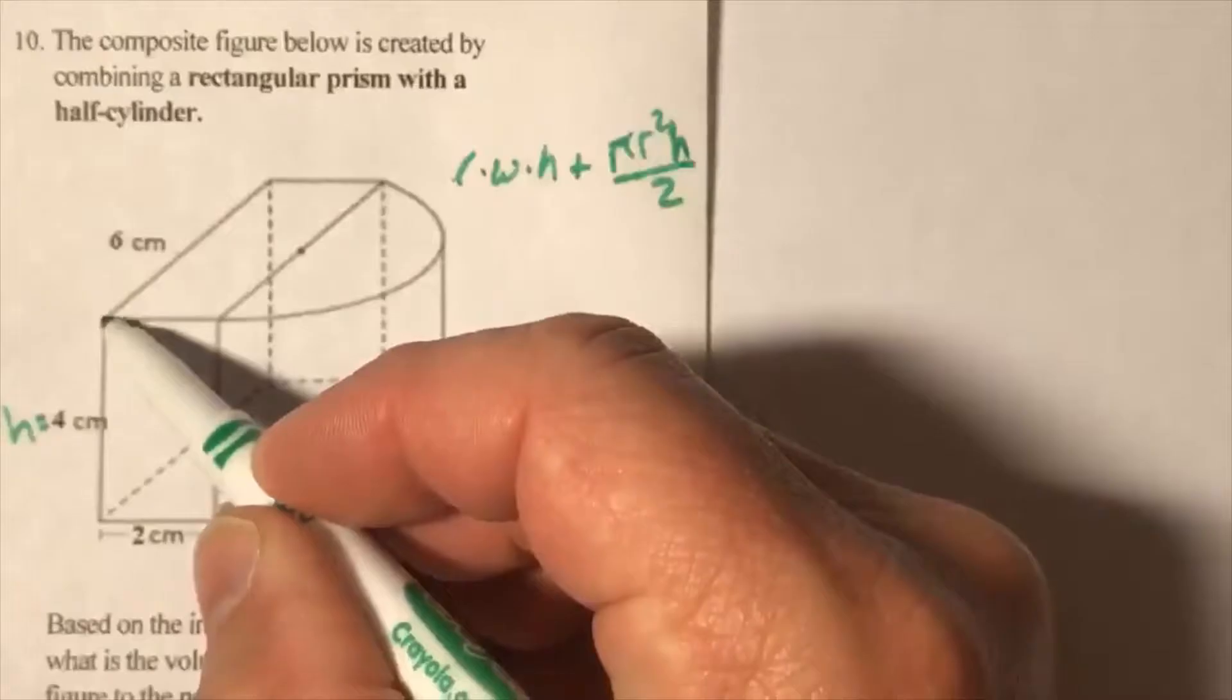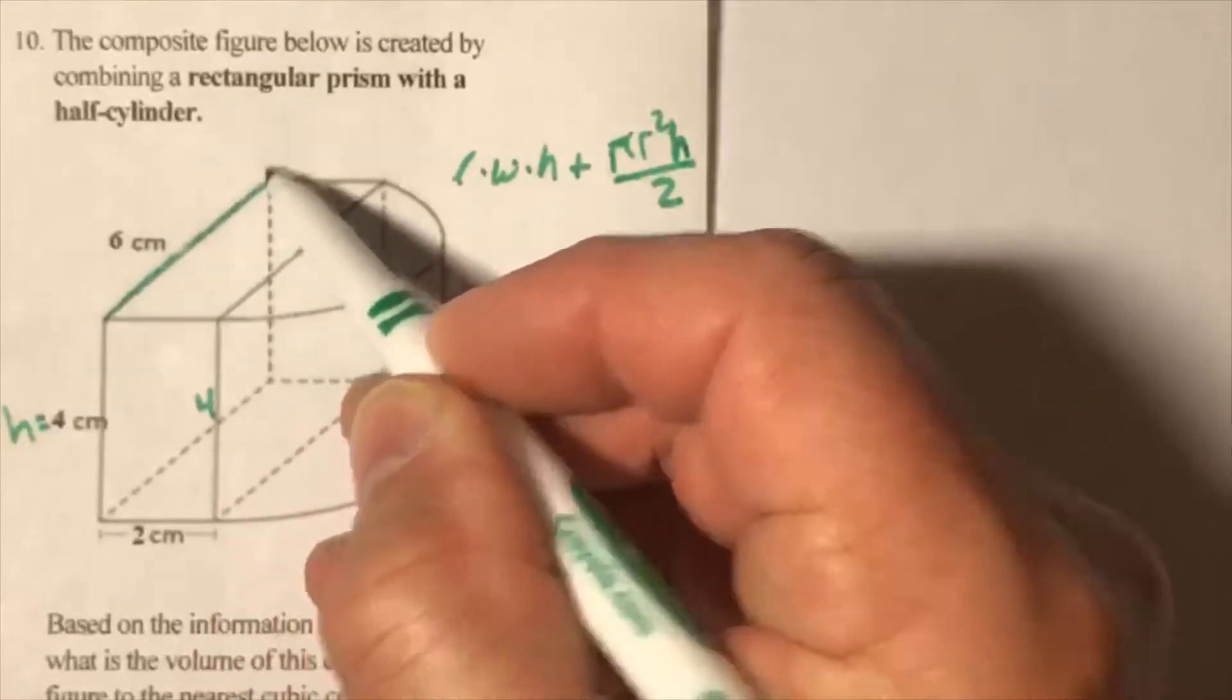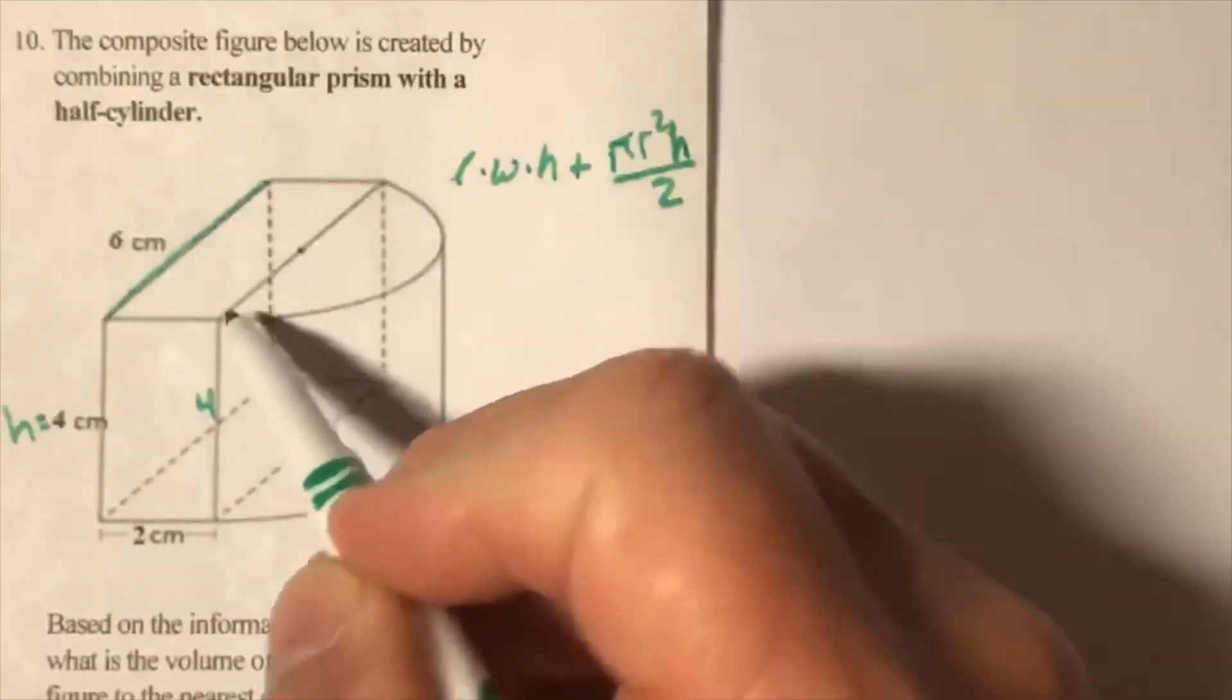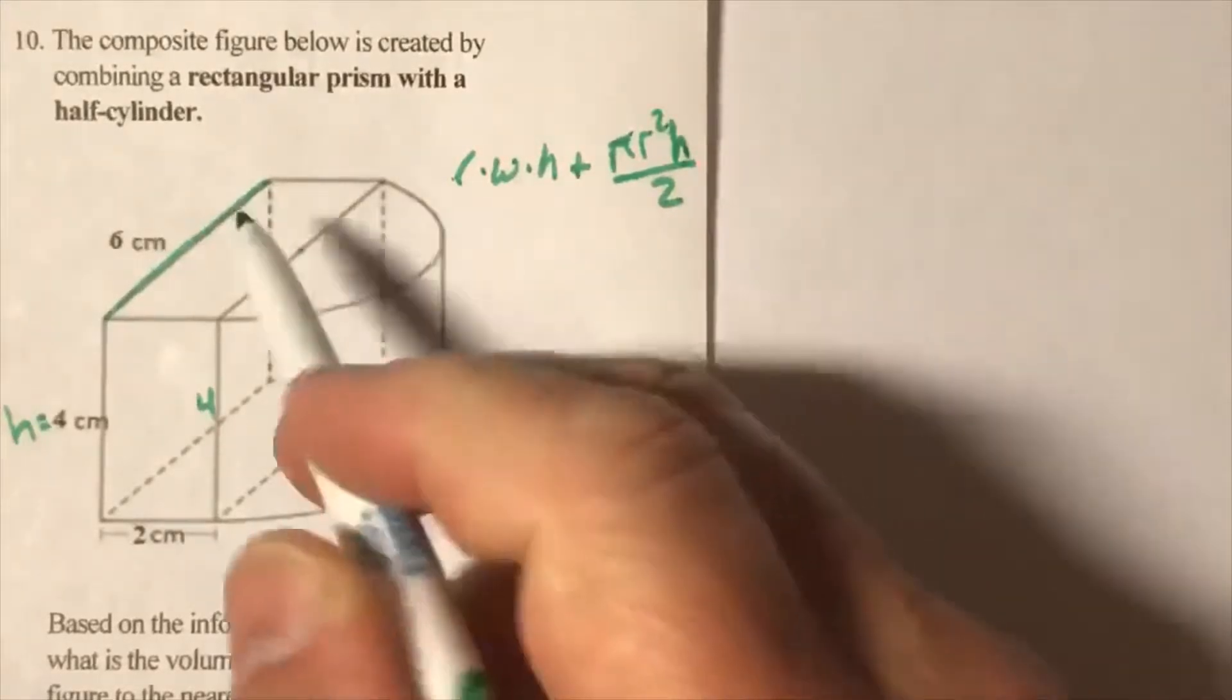Okay, alright. The piece here is part of the rectangle, and I bring it over here that's connecting to this half cylinder.